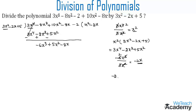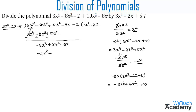Now let us multiply minus 2x with the divisor 3x² minus 2x plus 5. Multiplying minus 2x by 3x² gives minus 6x³; minus 2x times minus 2x gives plus 4x²; and minus 2x times 5 gives minus 10x. We write minus 6x³ plus 4x² minus 10x below the new dividend.